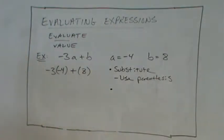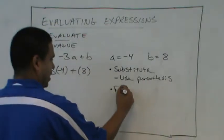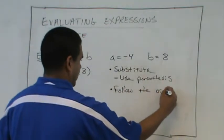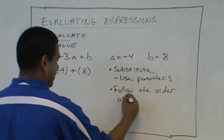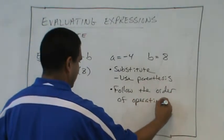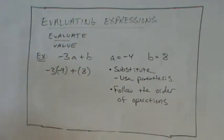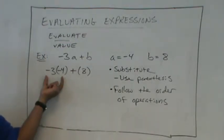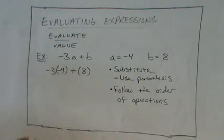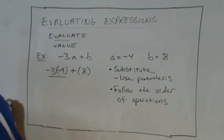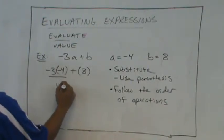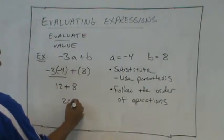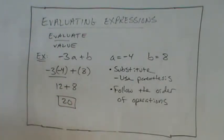After we substitute, you must still follow the order of operations. We're working on that, so you should know those. So would we add first or should we multiply first? Add. We should multiply first. So negative 3 times negative 4. 12. 12. Plus 8, 20. 12 plus 8 gives us 20. Okay. So you still follow the order of operations.